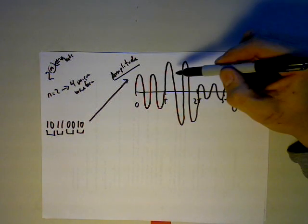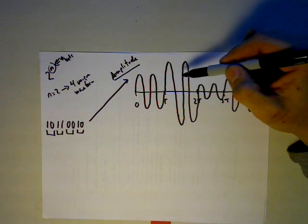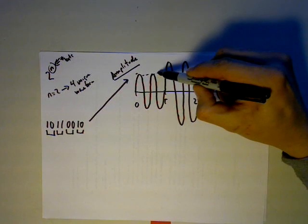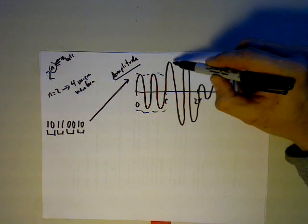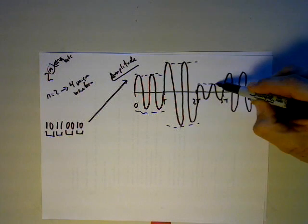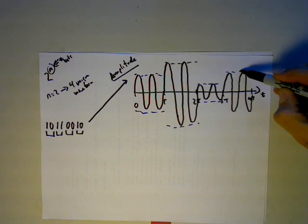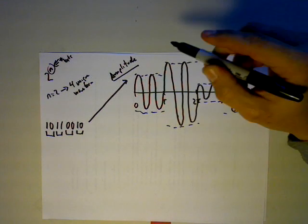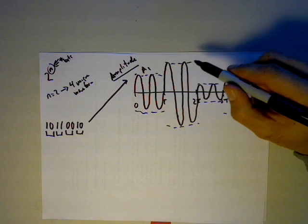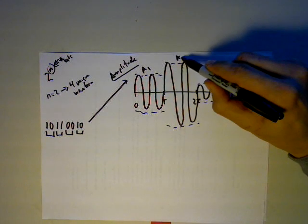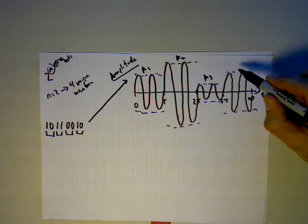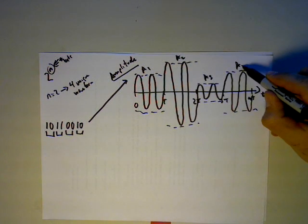We have a sine wave that has the same phase and the same frequency across all time, but the amplitude values over every T seconds change based on the pair of binary digits being converted. In this case, '10' is represented by amplitude A1, '11' by amplitude A2, '00' by amplitude A3, and '10' again by A1.